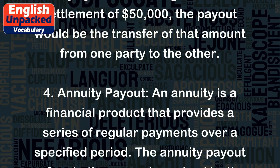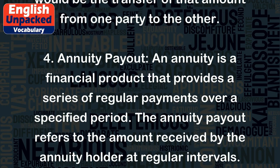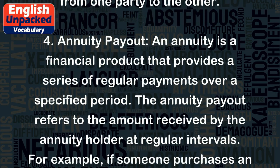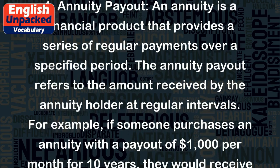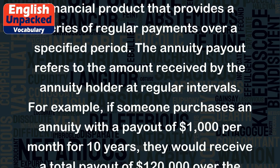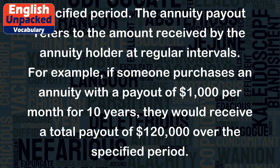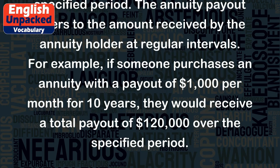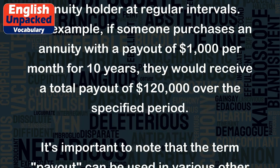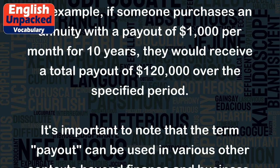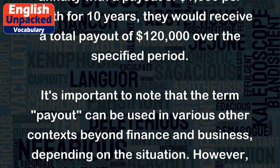4. Annuity Payout: An annuity is a financial product that provides a series of regular payments over a specified period. The annuity payout refers to the amount received by the annuity holder at regular intervals. For example, if someone purchases an annuity with a payout of $1,000 per month for 10 years, they would receive a total payout of $120,000 over the specified period.